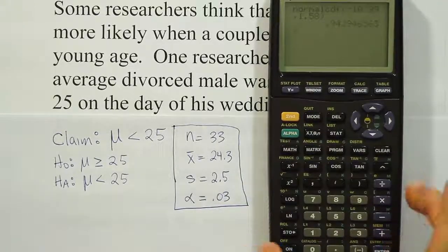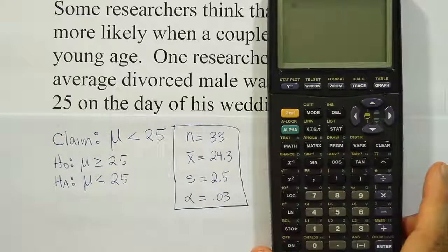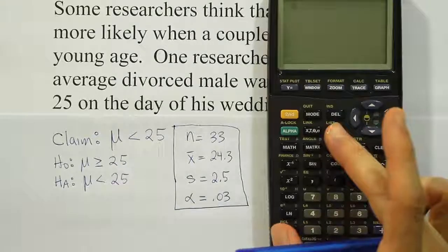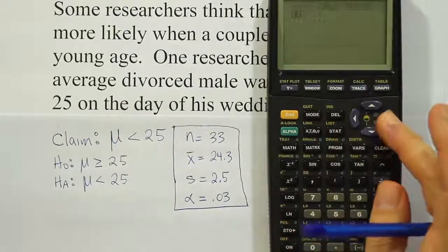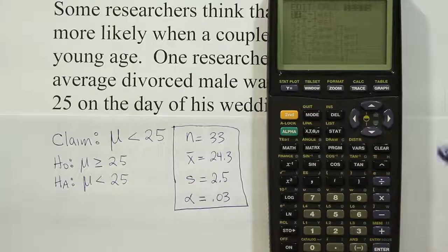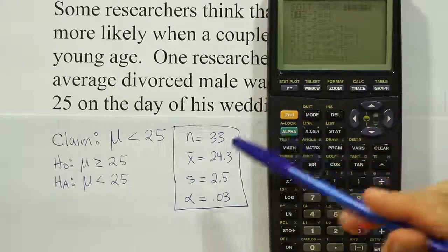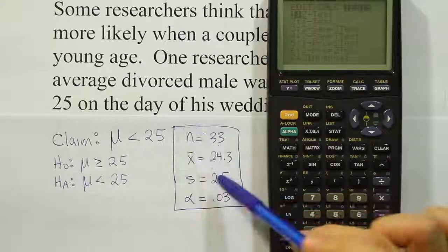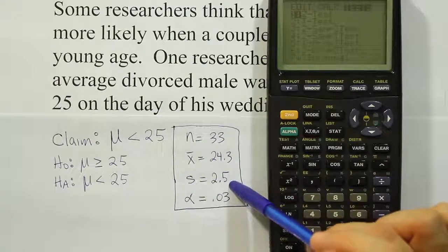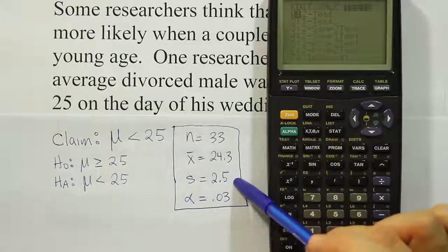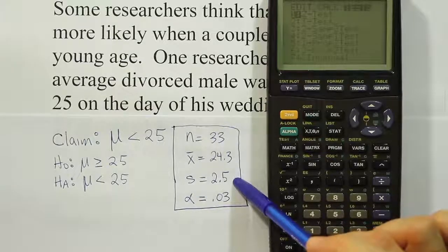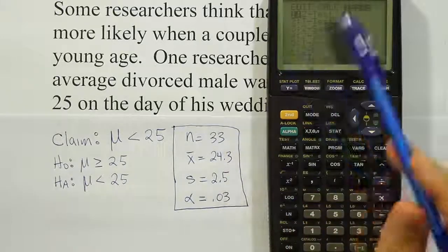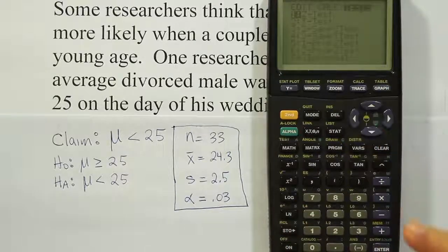I'm going to enter my data into the function that does this for us. I'm going to press the stat key, arrow over to where it says test, and we have our first option, the z-test. I'm using the z-test because my sample size is large. If you're in a more formal class, you'll also be looking for the population standard deviation to be known. We only have the sample standard deviation here, so it doesn't really fit that. But in my class, I allow my students to use the z-test as long as the sample size is large. Let's just do this problem with the z-test procedure.